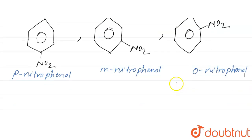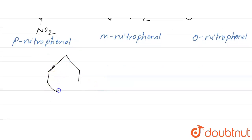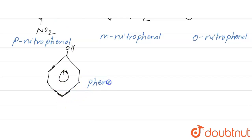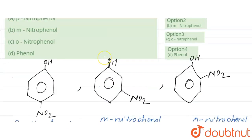The last structure is simply phenol — only OH is present on the benzene ring, with no nitro group.